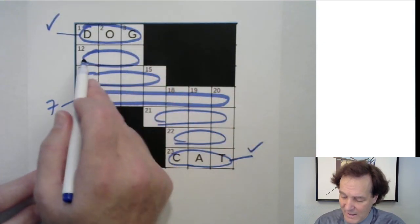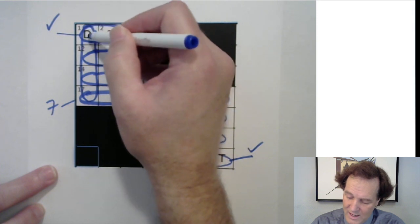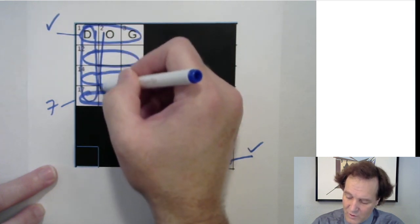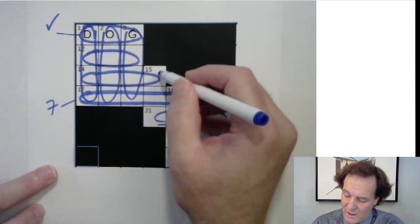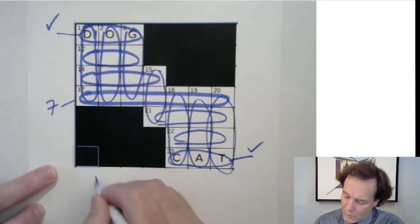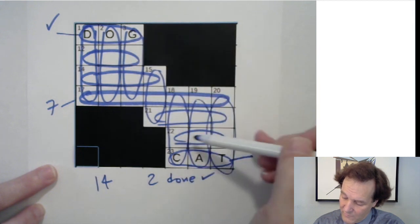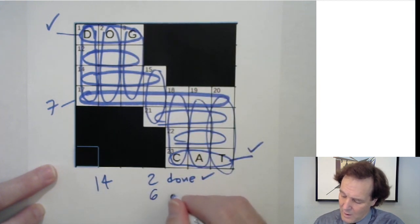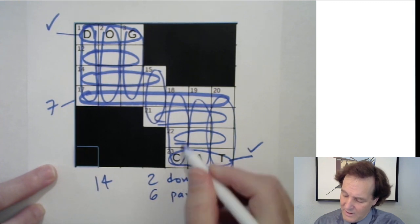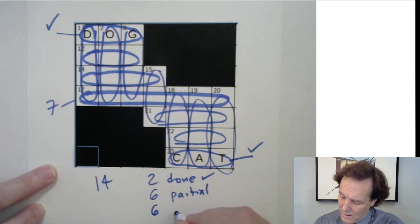How many spans does our grid have? We can count them: there's a seven-letter horizontal span, a four-letter one, two three-letter ones, and so on. The spans for 'dog' and 'cat' are fully completed - no more work needed there. Some spans are partially done with some letters filled in and some blank. Out of 14 spans total - seven vertical and seven horizontal - two are done, six are partially done, and six are completely empty.